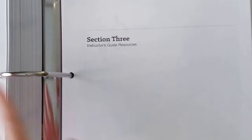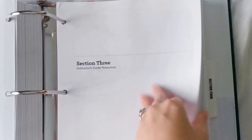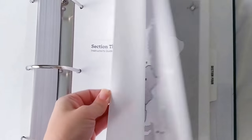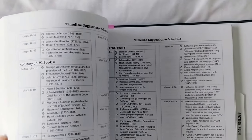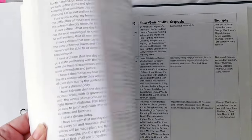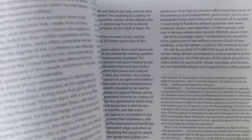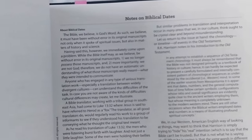Let me get to the next section. This is the instructor guide resources section, which is quite thick. In the beginning you'll see every kind of map you could ever need for doing history this year. There are also field trip planning sheets, timeline suggestion schedules, life skills, inaugural addresses — just a lot of different articles. Some we've used a lot, some we haven't, but I really appreciate that Sunlight includes all of this as extra resources. There are also notes and biblical dates.